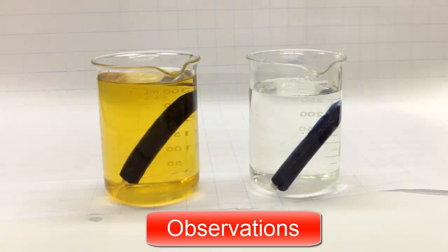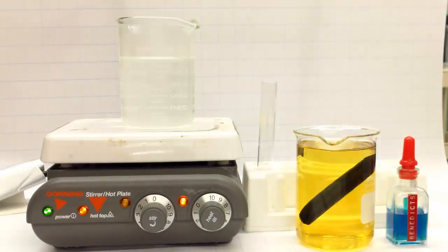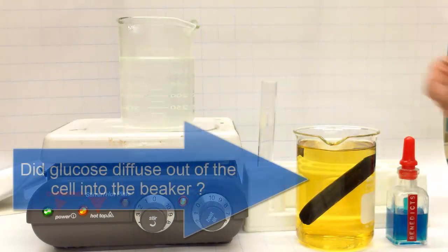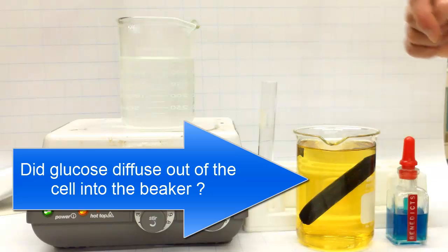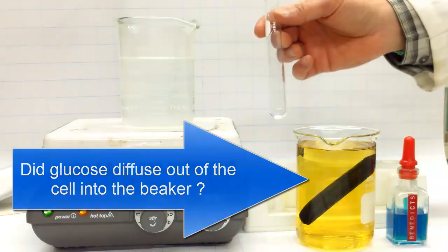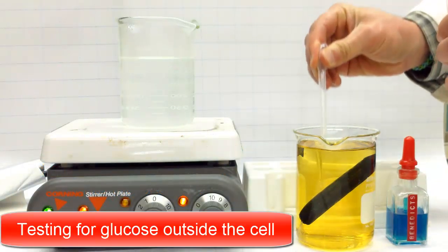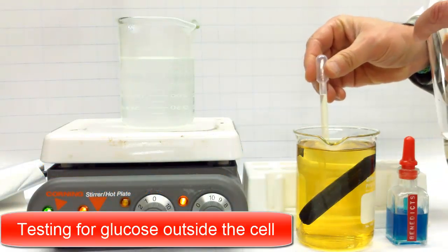The only thing left to determine is what happened to the glucose. So what we need to do to complete part 1 of this diffusion lab is check to see if there is glucose outside of the cell. To do that, take a test tube.